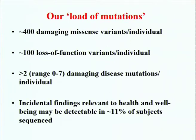We were interested in our mutation load — to coin Muller's classic phrase from his 1950 paper. In summary, we reckon the average individual probably contains about 400 damaging missense variants, and about 100 of these are loss-of-function variants that knock out the allele completely. In terms of disease mutations specifically, we reckoned that on average about two, or perhaps a range of zero to about seven, damaging disease mutations can be found per individual.